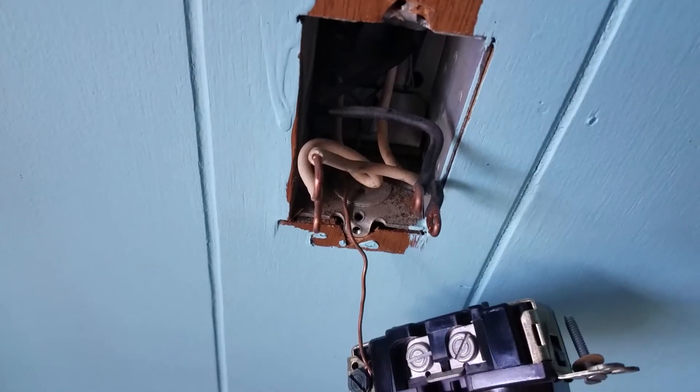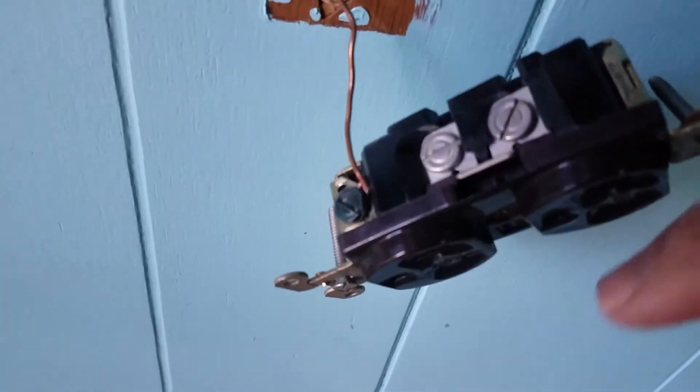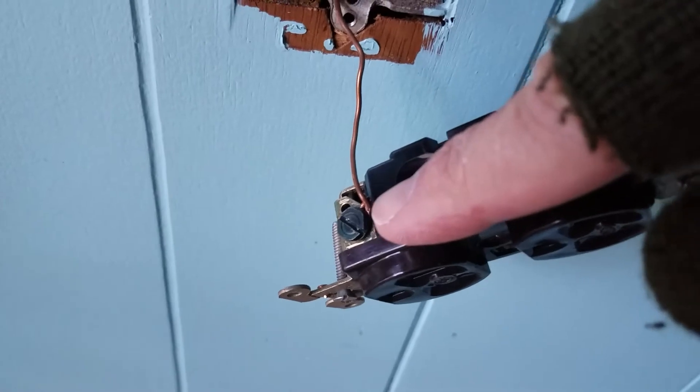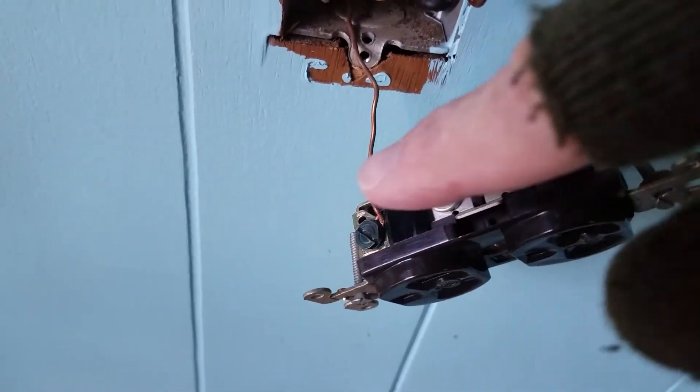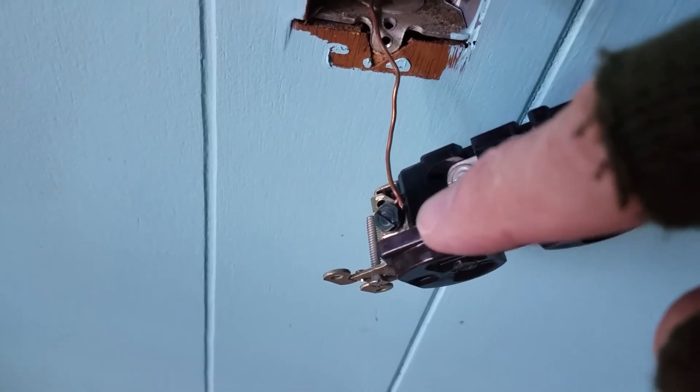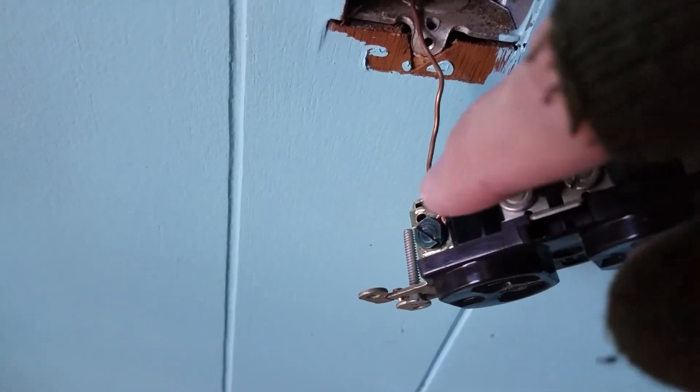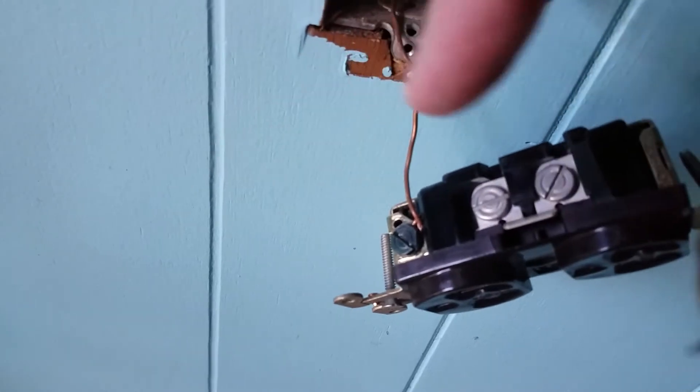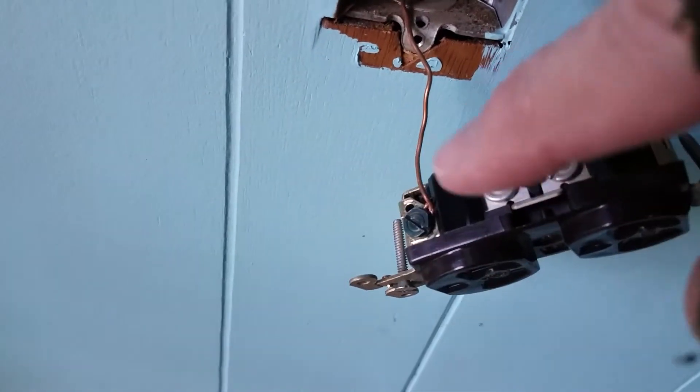Two things I forgot to mention. One, when you attach the wires make sure they go on clockwise because this screw is going to go on clockwise to tighten. So if you wrap the wire the other way counterclockwise, it's just going to loosen up on you.